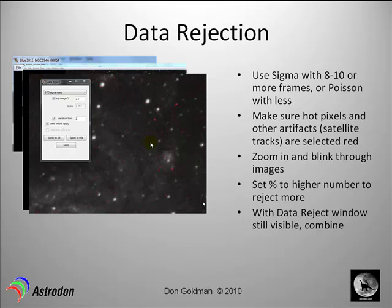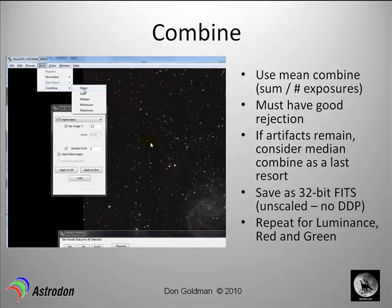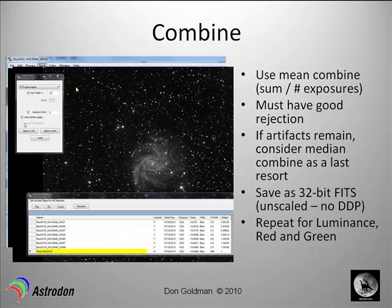Now that all bad data are rejected, you simply finish and then combine. In combine, we're generally going to use a mean combine. Go to CCD Stack, combine, and select mean. Remember, all those red pixels are still marked so those data will not be used when they're added up. We've created a new image from all these blue frames called the mean blue — seven 20-minute exposures.